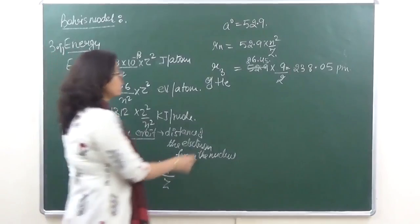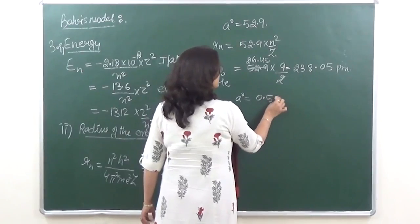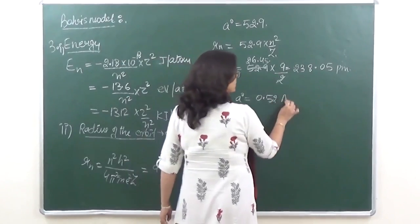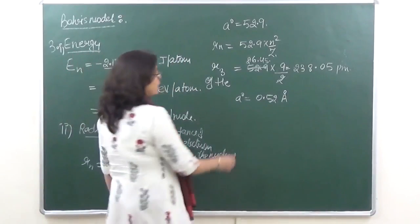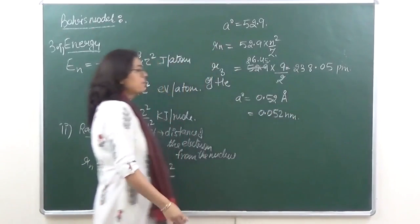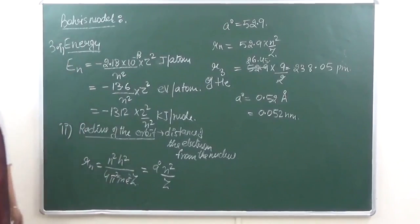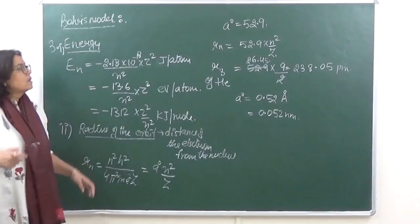If we take a naught in angstrom, the value of a naught in angstrom is equal to 0.52 angstrom. And if we take it in nanometer, then the value becomes equal to 0.052 nanometers. So depending upon the unit, the value changes: picometer is equal to 10 raised to power minus 12, angstrom is 10 raised to power minus 10, and nanometer is 10 raised to power minus 9.